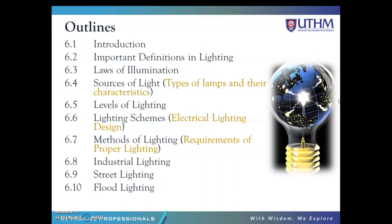This is the outline for Chapter 6: Illumination. We have 10 subtopics. First is introduction. Second, important definitions in lighting — we will cover luminous flux, illuminance, luminous intensity, luminance, and more. Then laws of illumination, sources of light, types of lamps and their characteristics, levels of lighting, lighting schemes, electrical lighting design, methods of lighting, requirements of proper lighting, industrial lighting, street lighting, and flat lighting.